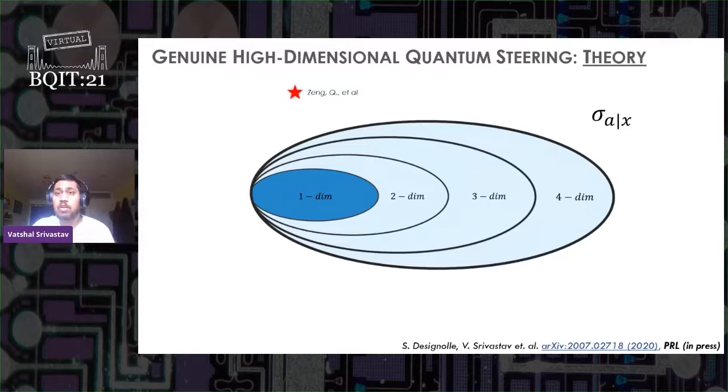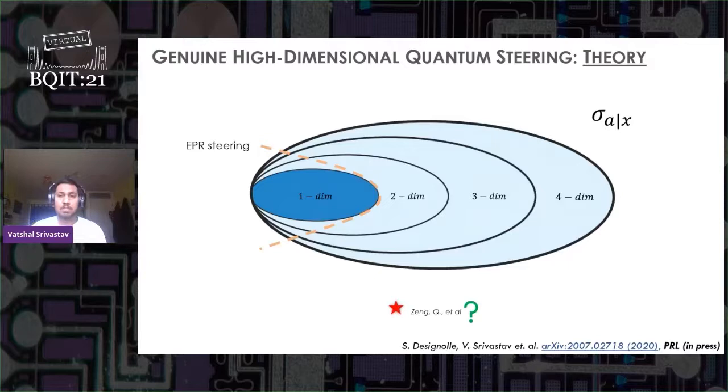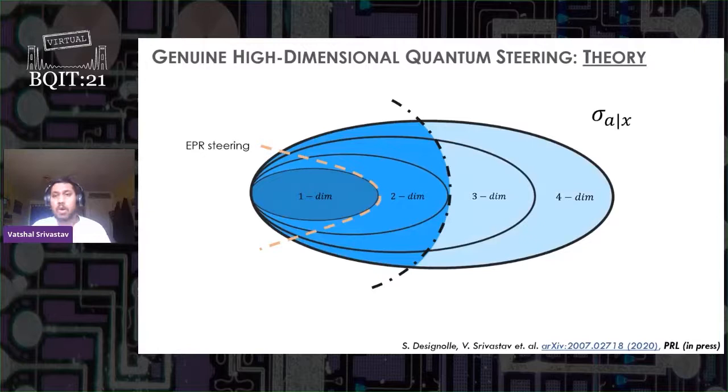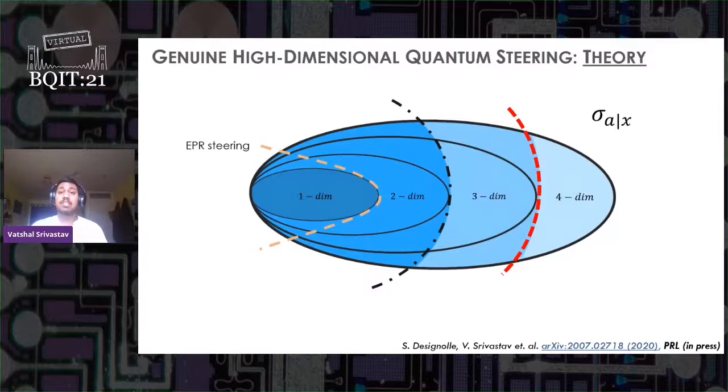Now, for example, let's take the states prepared by an experiment that I mentioned before. So far, EPR steering inequalities distinguish between the unsteerable set and all the others. It does not tell which dimensional assemblage is responsible for the steering or what is the dimensionality of the entanglement present. What we want is a particular kind of steering test that can distinguish between the dimensions.